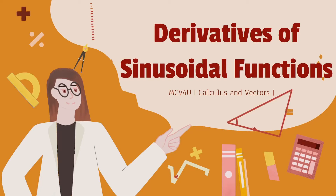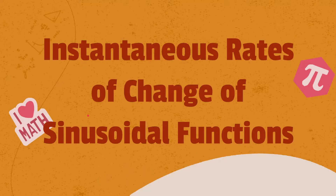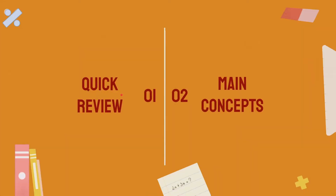Hello everybody and welcome to today's video. Today we will start chapter 4 of calculus and vectors, and this chapter focuses on the derivatives of sinusoidal functions. Chapter 4.1 will deal with instantaneous rate of change of sinusoidal functions, and as we've already done this, this is essentially the preliminary step towards finding the derivative of these functions. First we're going to go through some quick review and then talk about the main concepts we need to know for this chapter.